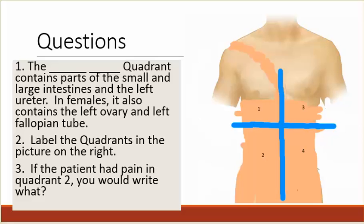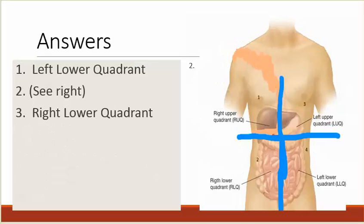The blank, blank quadrant contains parts of the small and large intestines and the left ureter. In females, it also contains the left ovary and left fallopian tube. Number two: label the quadrants in the picture on the right — just pause the video. Number three: if the patient had pain in quadrant two, you would write what? Number one: left lower quadrant. Number two: see the diagram on the right. Number three: right lower quadrant.